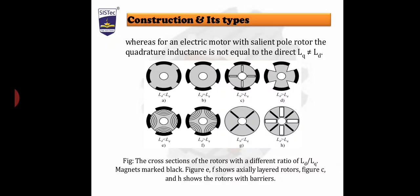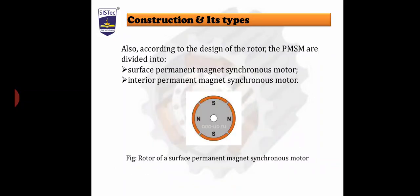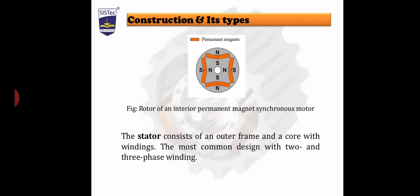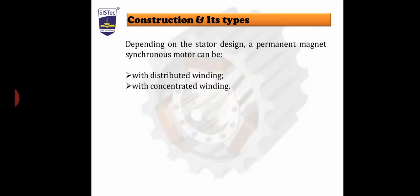Also, according to the design of the rotor, permanent magnet motors are divided into two categories: number one is the surface permanent magnet synchronous motor, and the other is called the interior permanent magnet synchronous motor. We will see the diagram of the surface permanent magnet synchronous motor, and then the diagram of the interior permanent magnet synchronous motor. The stator consists of the outer frame and core with the winding. The most common design uses two or three phase winding. Depending on the stator design, a permanent magnet synchronous motor can be divided into two categories: with distributed winding and with concentrated winding.